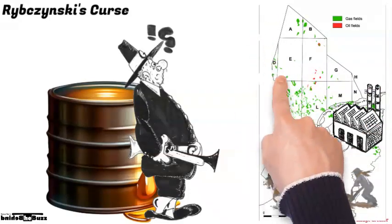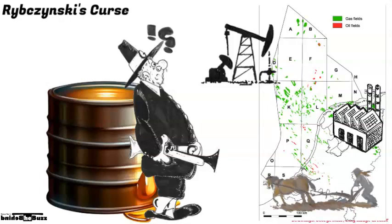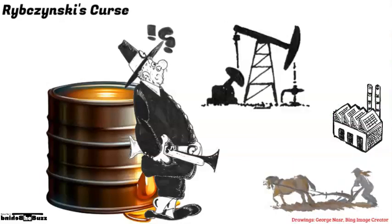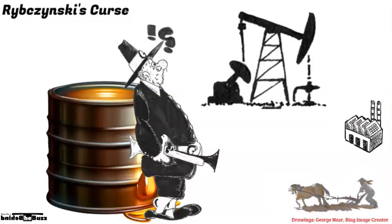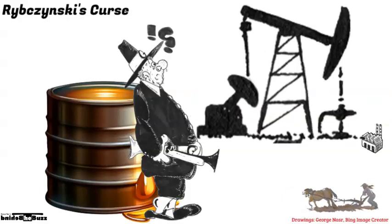This undermined exports. Less exports meant less manufacturing, more unemployment, just as the oil sector expanded. Dutch economic numbers did well. Dutch people, not so well.